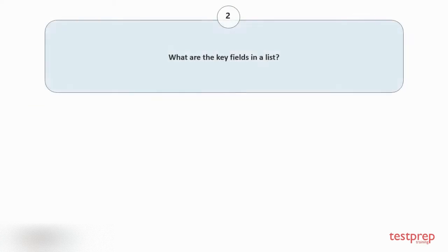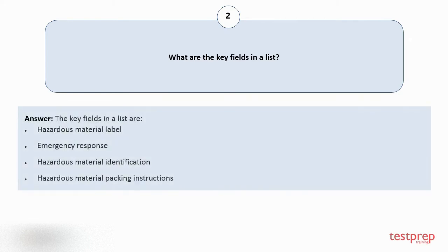Question number 2: What are the key fields in a list? The key fields in a list are: 1. Hazardous material label, 2. Emergency response, 3. Hazardous material identification, 4. Hazardous material packing instructions.